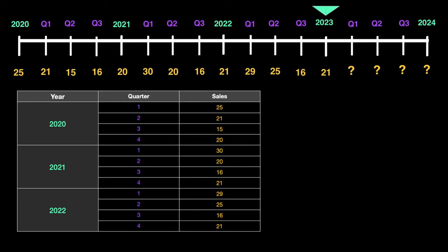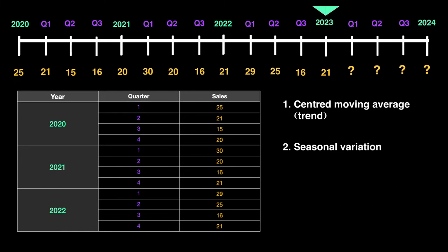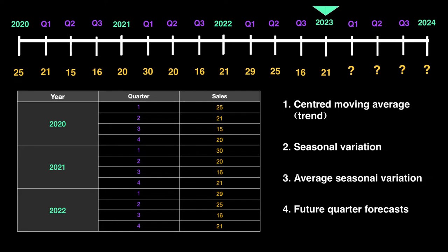The first is called the centered moving average — this is the trend the company is trying to determine. For example, in summer people eat more ice cream so we expect more sales, and in winter we see a drop. Second, we look at seasonal variation: does the same quarter bring more or less sales across years? Third is average seasonal variation. Lastly, we use a graph to predict future quarter forecasts. Let's begin with the centered moving average.